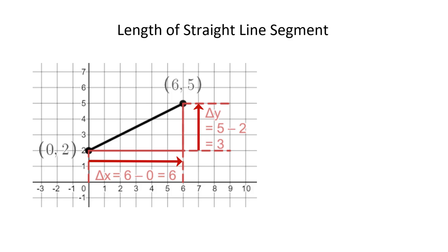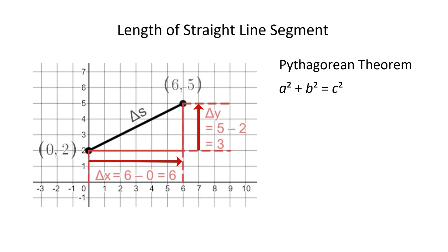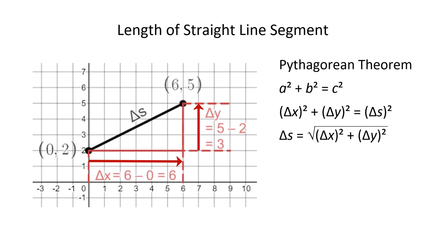The distance measured along the diagonal can be called delta s. In calculus, we often use the letter s to represent distance, because the letter d has so many other jobs to do. We use the Pythagorean theorem, a squared plus b squared equals c squared, which gives us delta x squared plus delta y squared equals delta s squared. So delta s is the square root of delta x squared plus delta y squared.